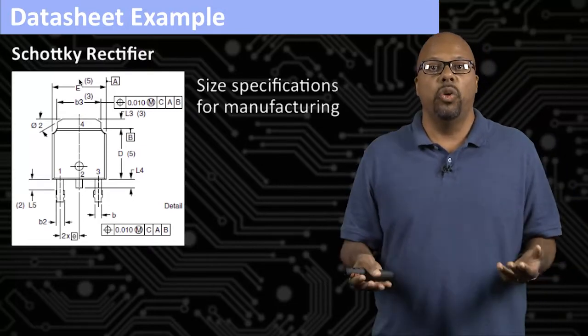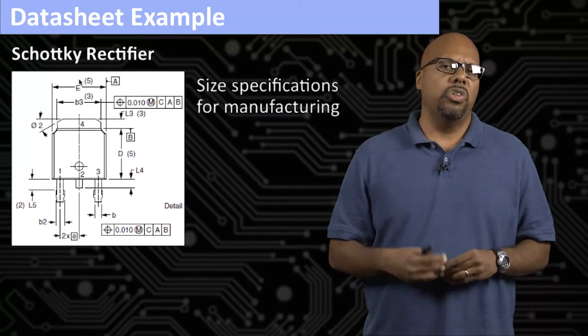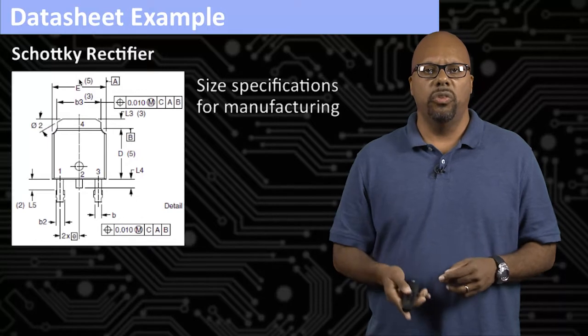And if they're not, you need to know that before you order the part so that you can do something about it. So the physical size and physical dimensions, you always find that in a datasheet and you'll need to be able to read that.